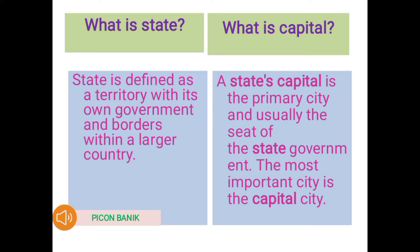What is a state? A state is defined as a territory with its own government and borders within a larger country. What is a capital? A state's capital is the primary city and usually the seat of the state government. The most important city is the capital city. You first learn what is a state and what is a capital. If you have any problem regarding this chapter, you may call me or message through WhatsApp.